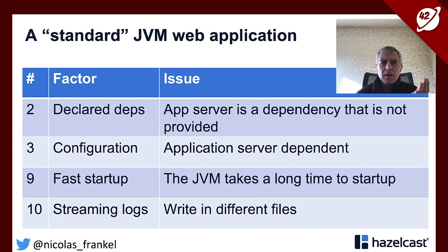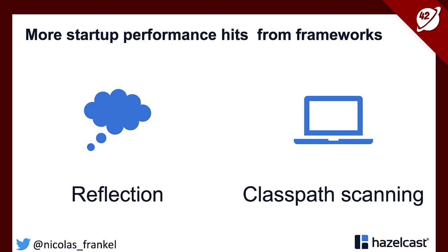There are even more issues because it's not just about the JVM but also the frameworks we use — Spring, JavaEE, and others use a lot of reflection, which is a startup performance hit. At startup, they load classes through reflection. Spring and JavaEE also do classpath scanning to check which classes have certain annotations. So it seems like the JVM is not made for the cloud.